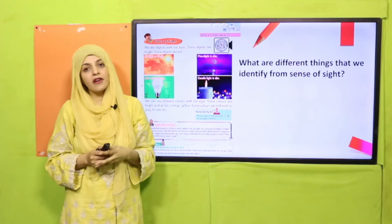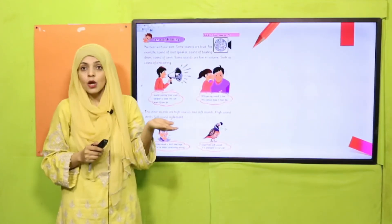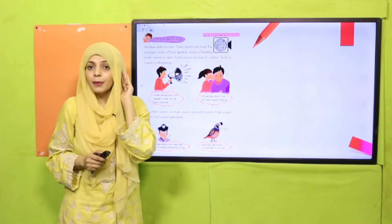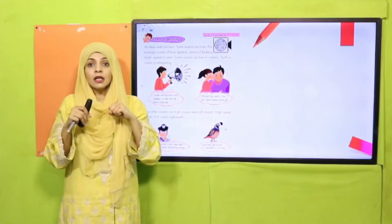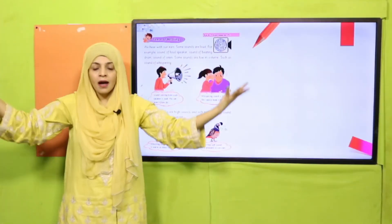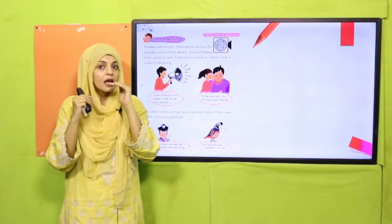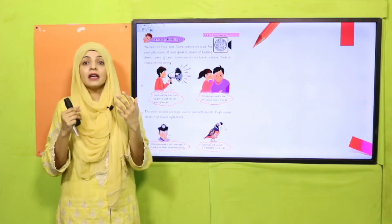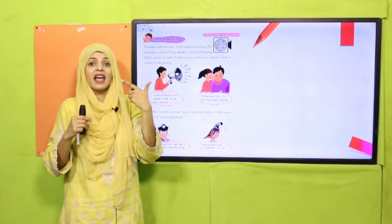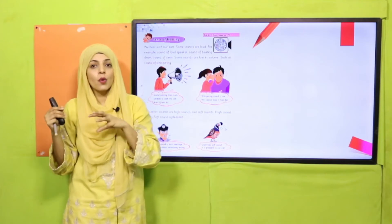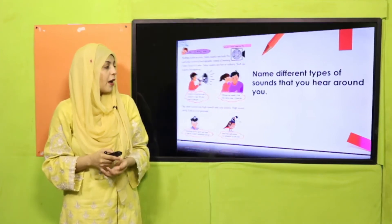On page number 86, we discussed the sense of hearing — where we hear from and what kinds of sounds we hear. For example: loud — a very high sound; soft — a quiet sound; very low — whispering, like 'hello, hello'; and then very high and shrill, like a whistle. Music and the sound of birds are soft and pleasant to hear.